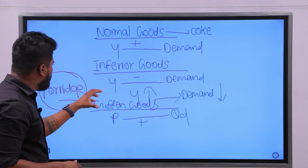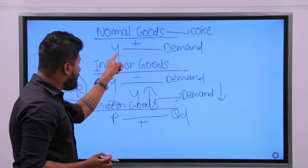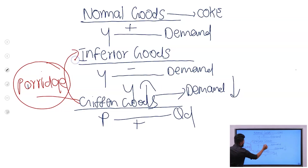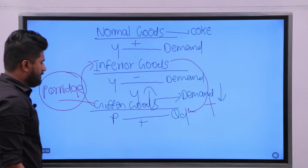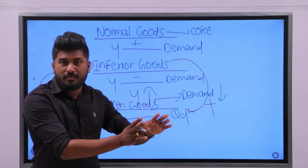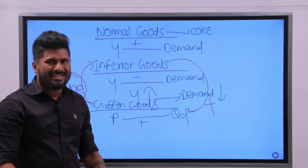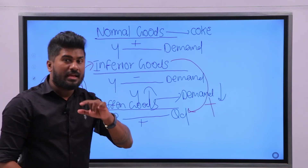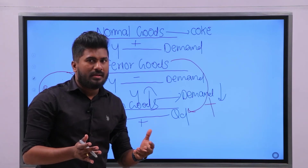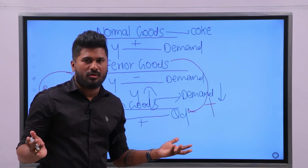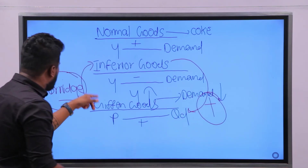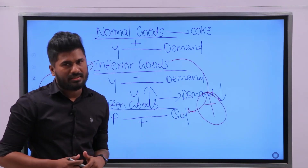Every Giffen good is an inferior good, but every inferior good is not a Giffen good. For example, a food cycle is inferior to you once you pass out from university, but can we say food cycles are used by very poor people? No — because some people can't even afford a food cycle. So every inferior is not a Giffen, but every Giffen is an inferior. This is a very important part to understand.